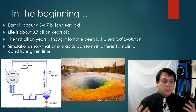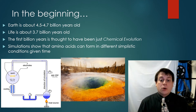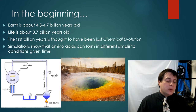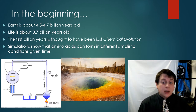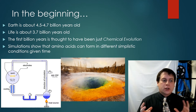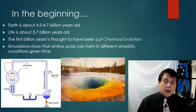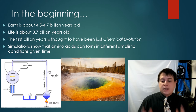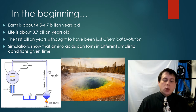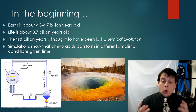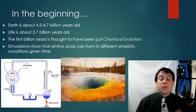For the first billion years, we have this concept of chemical evolution. Through a number of laboratory experiments, we've shown that in what we believe to be early Earth environments — based on geologic data, sediment, and rock formations — there is evidence to back this up. Amino acids started to form under simplistic conditions. Amino acids are the building blocks of proteins, and these simple organic compounds can form under the right conditions — things that normally are made inside living organisms.